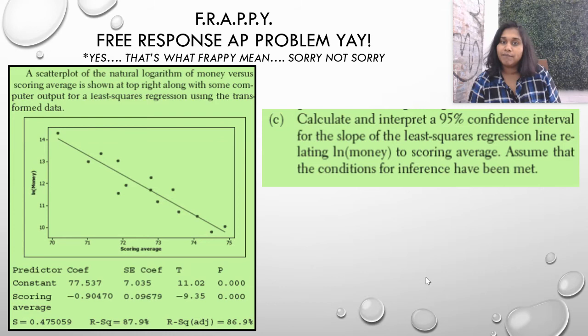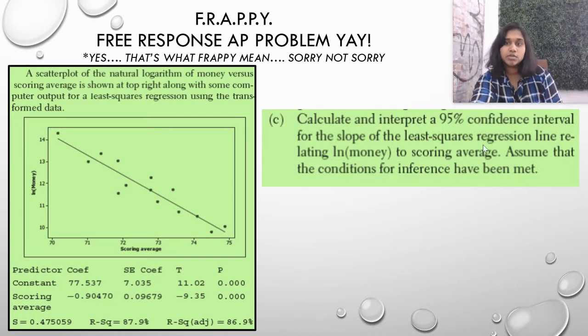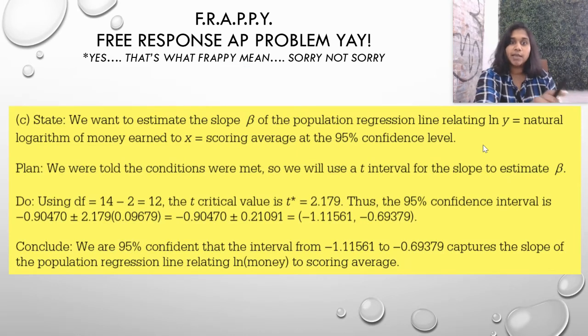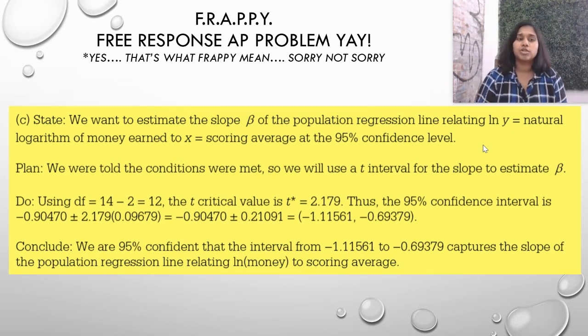Last question. Calculate and interpret a 95% confidence interval for the slope of the least squares regression line relating the natural log of money to scoring average. Assume that conditions for inference have been met. Here's our plan step. Conditions for inference have already been met. This is a state plan do conclude. We want to estimate the slope B of the population regression line relating the natural log Y to the natural logarithm of money earned to X, earned for X is equal to scoring average of the 95% confidence interval. Most of it is a stem sentence. Some of it comes from the given information plan. We were told conditions were met. We use a T interval for the slope to estimate B.